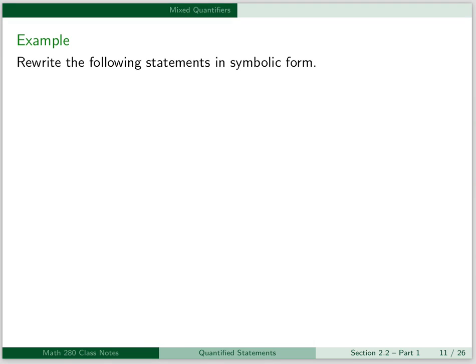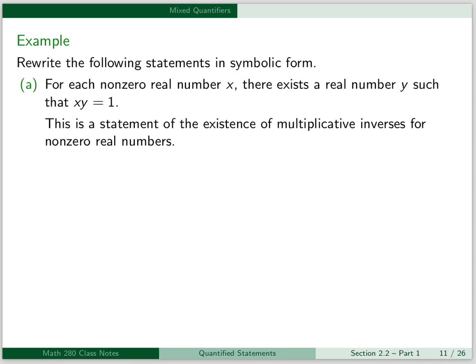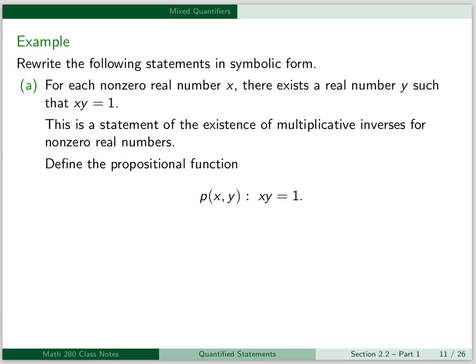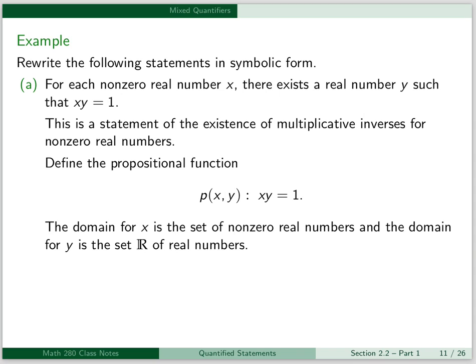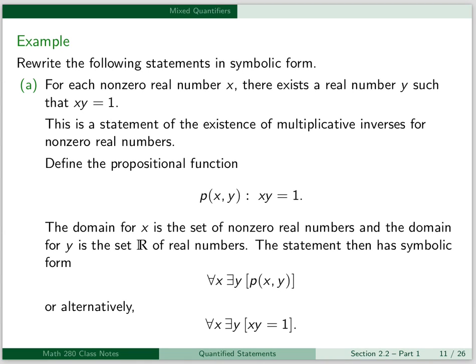For our next example, we want to rewrite the following statements in symbolic form, and these will involve some mixed quantifiers. Our first statement is: for each non-zero real number x, there exists a real number y, such that x times y is equal to 1. This is a statement of the existence of multiplicative inverses for non-zero real numbers. To write it in symbolic form, the propositional function p of x, y will be x times y equals 1. The domain for x is the set of non-zero real numbers, and the domain for y is the set R of real numbers. The statement then has symbolic form: for all x, there exists a y, p of x, y. Or alternatively: for all x, there exists a y, such that x times y equals 1.